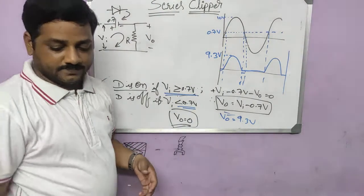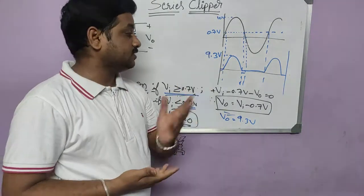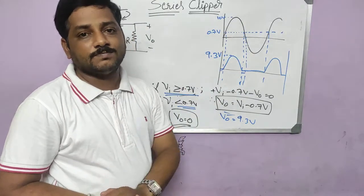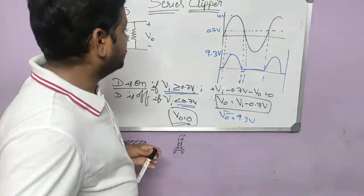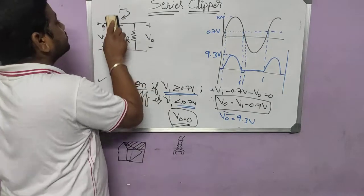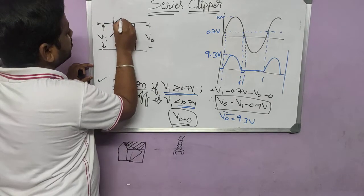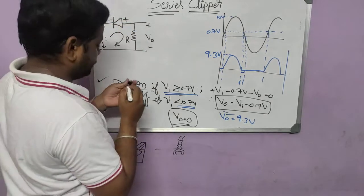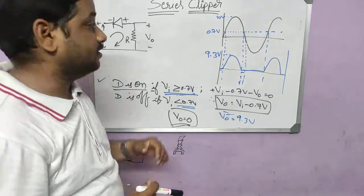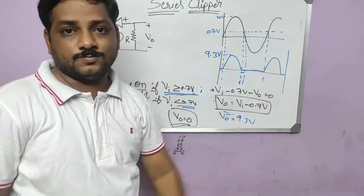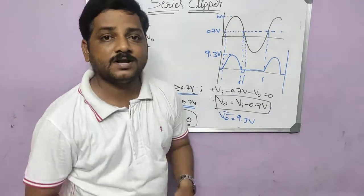I hope that is very clear. Now let me tell you about the positive clipper. What we discussed so far is the negative clipper — it clips the complete negative portion of the input. If you want a positive clipper, only one small change is needed: just reverse the diode. If the diode is applied in reverse, it will conduct during the negative cycle but not during the positive cycle. So the positive voltage will be clipped and the negative voltage will appear as output — that is the positive clipper.